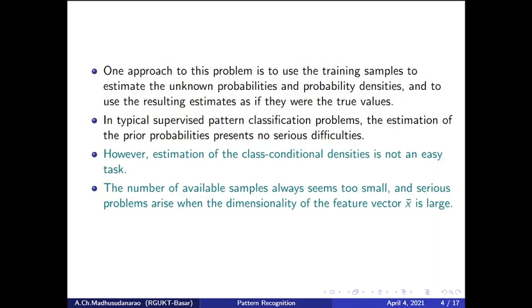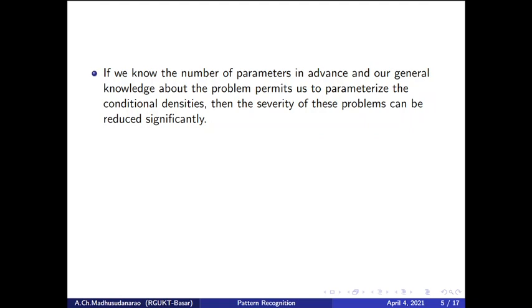Estimation of prior probabilities is very straightforward and can be done easily. But there is a difficulty in estimating the likelihood functions f(x-bar | omega j) for j from 1 to C. As we already saw in yesterday's class, estimation of a probability density function for a continuous random variable is not easy — it is very difficult. We went for the histogram approximation, which required a large number of training samples to estimate continuous probability density functions.